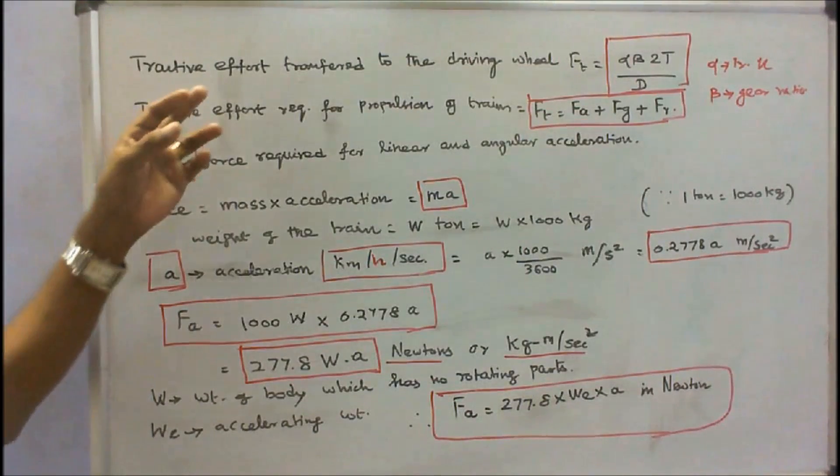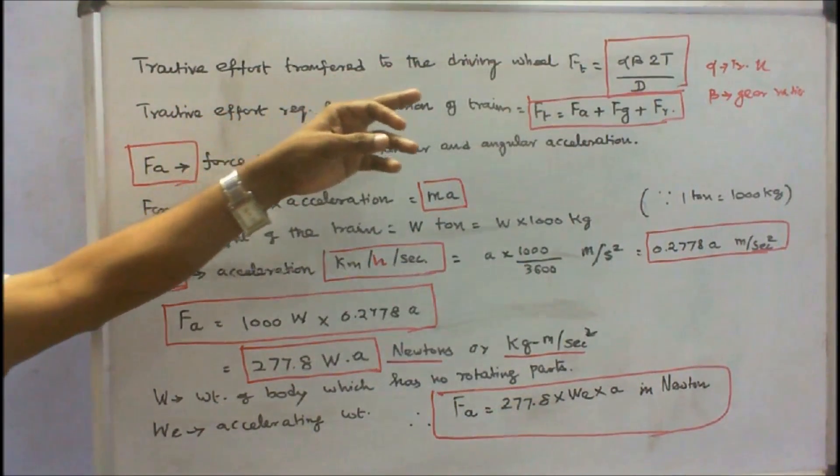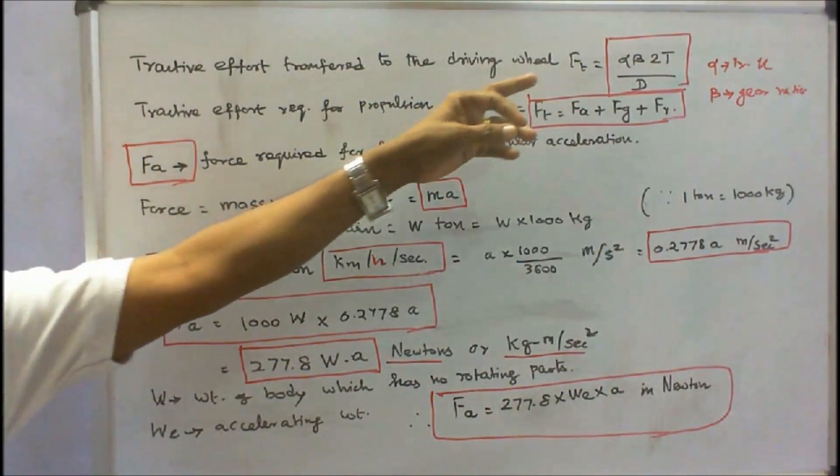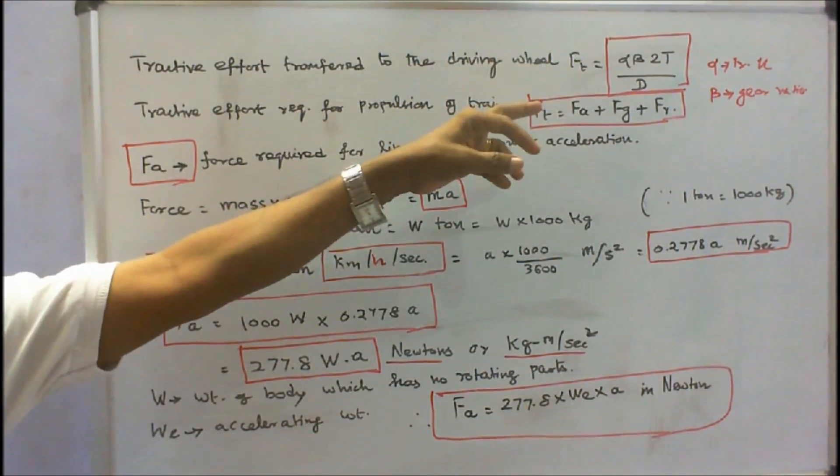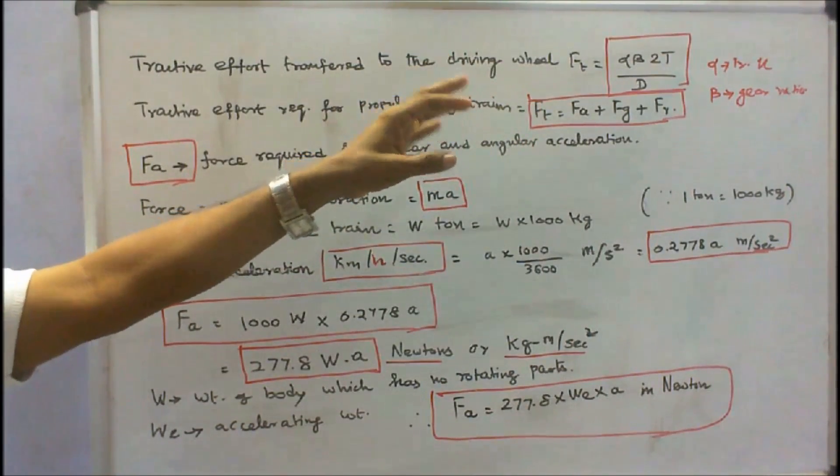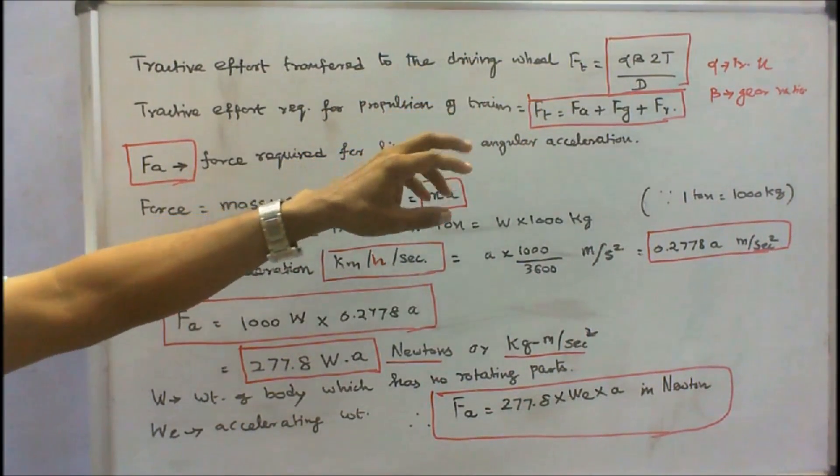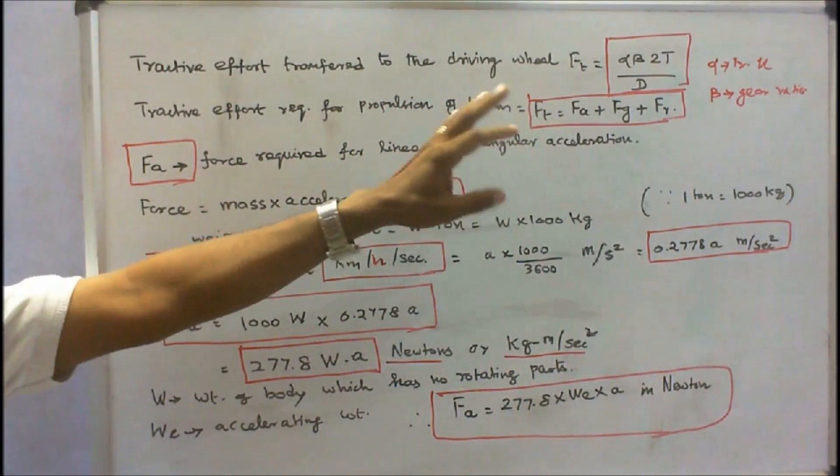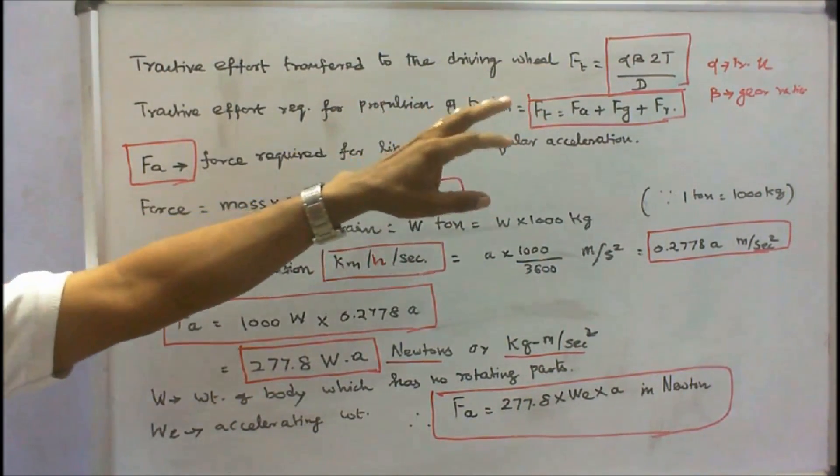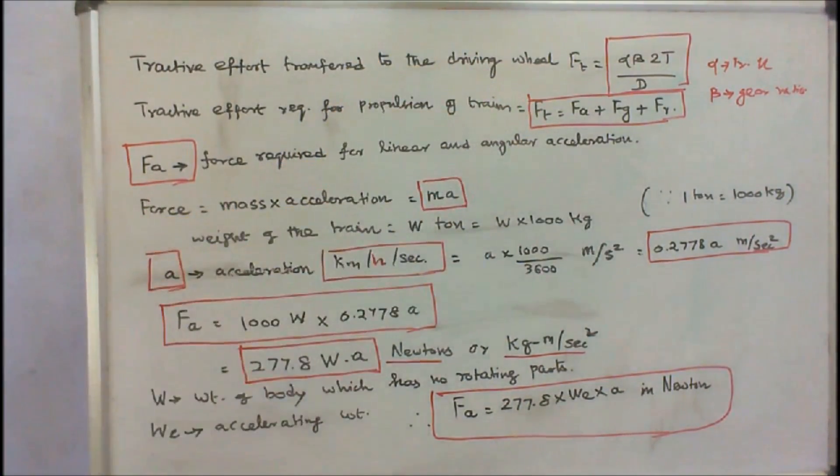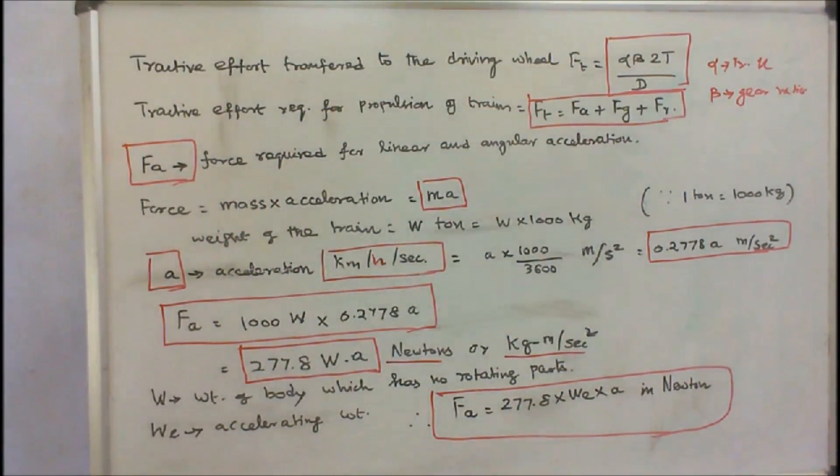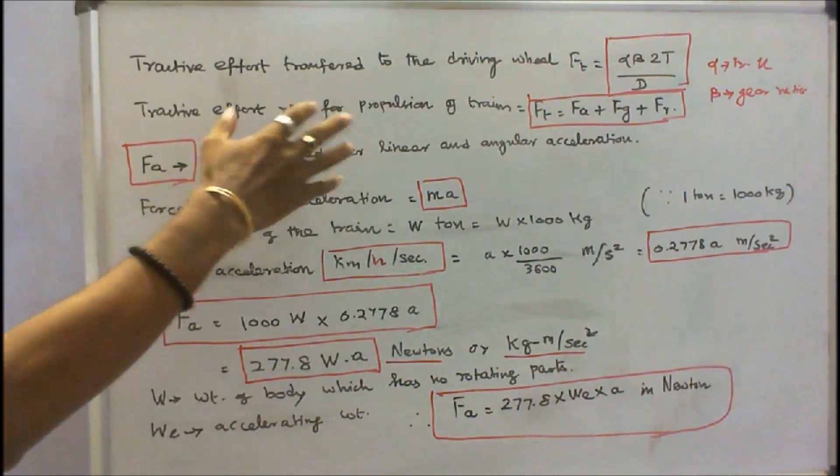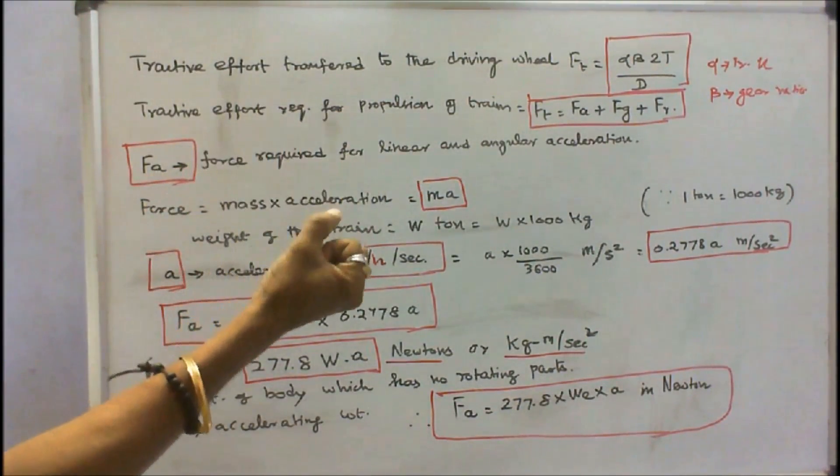We know that tractive effort transferred to the driving wheel FT is equal to alpha into beta into 2 into T divided by capital D. Where alpha is the transmission efficiency, beta is the gear ratio, T is the torque developed by the motor, and D is the driving wheel diameter.